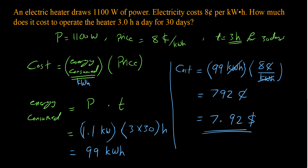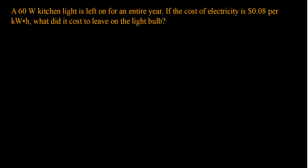Let's go to another example related to calculating the cost of energy consumed. A 60-watt kitchen light is left on for an entire year. If the cost of electricity is 0.08 dollars per kilowatt hour, what does it cost to leave on the light bulb?